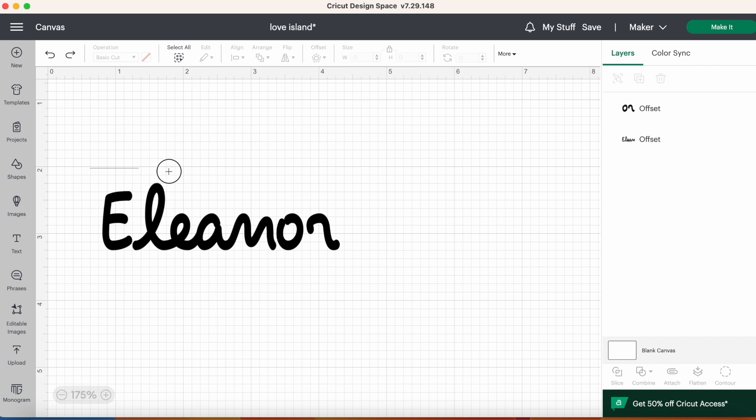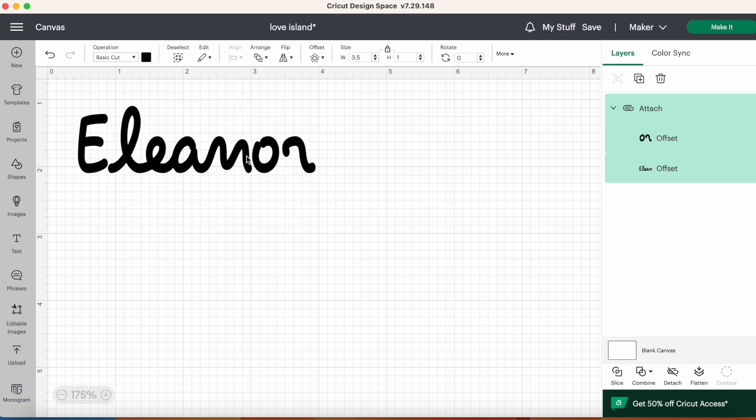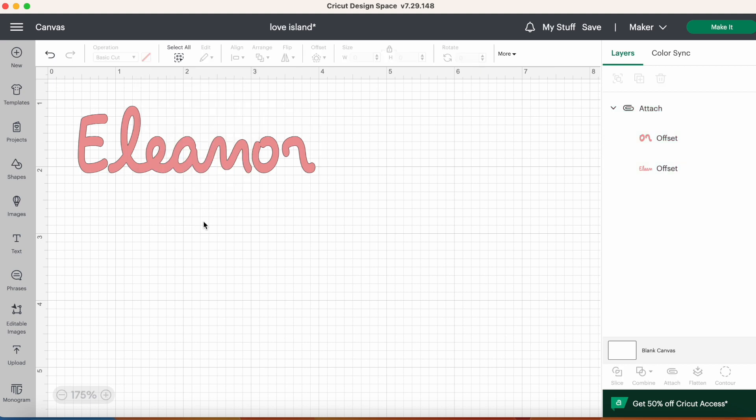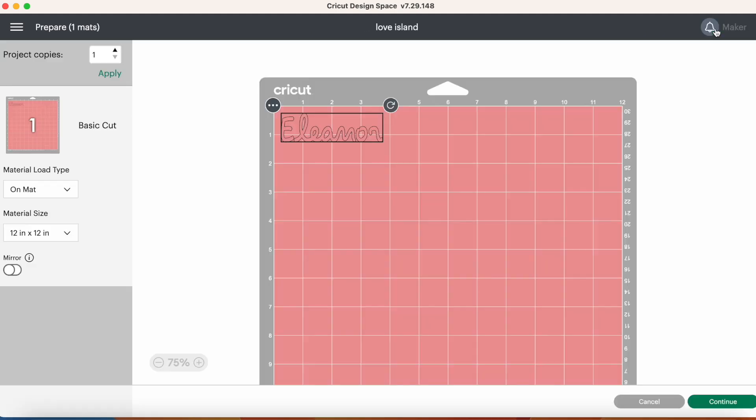The next thing I want to do is attach the two parts together, otherwise Cricut design space will split it up. I've selected everything and now I'm hitting attach so that it comes as one solid piece. I'm just going to add some color so you can kind of visually see what it will look like, and now we are ready to make it. I will be selecting holographic permanent vinyl as my cut settings, so let's cut.